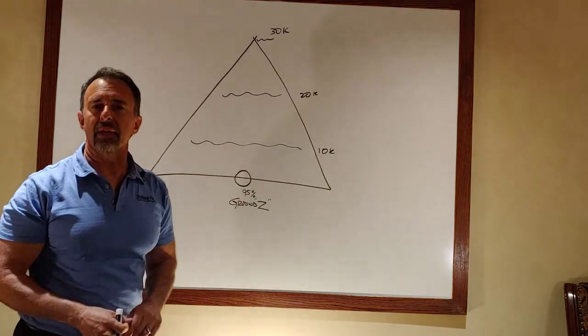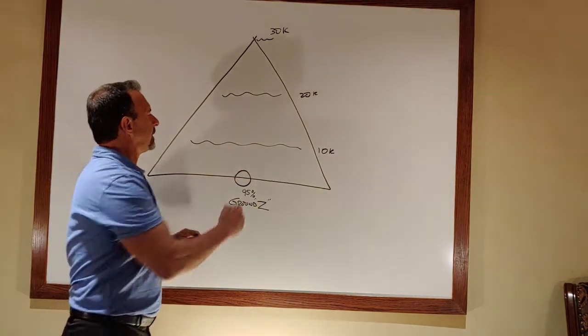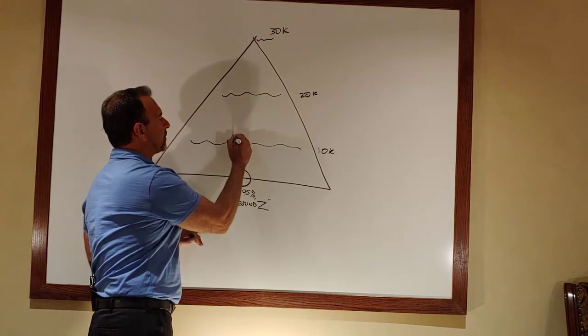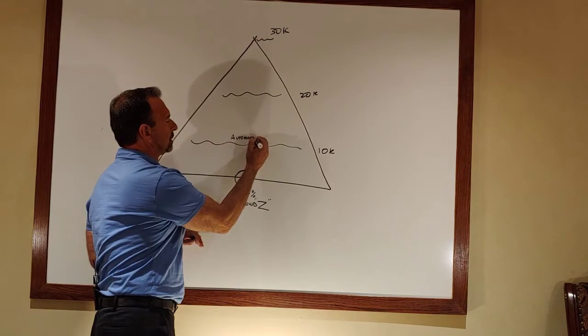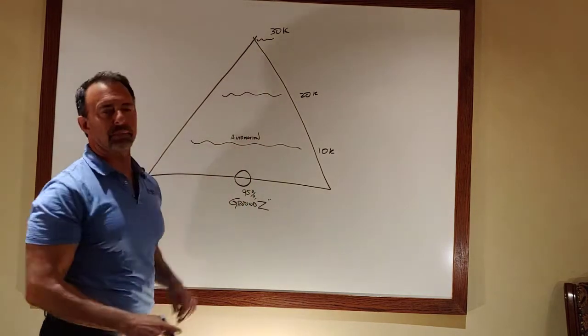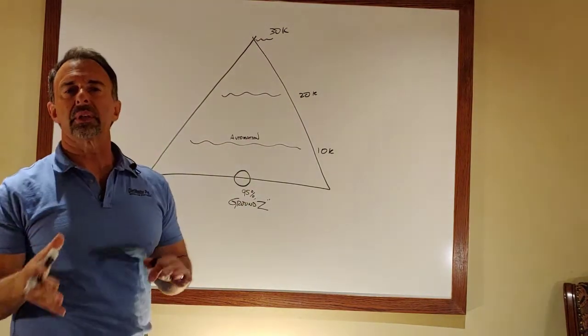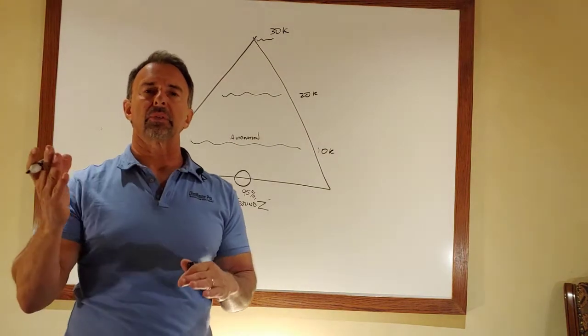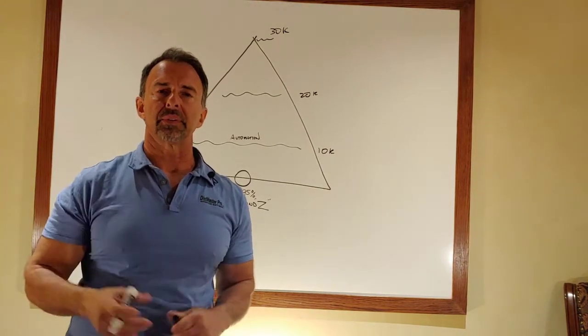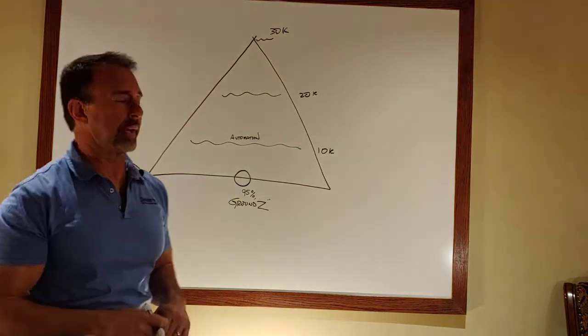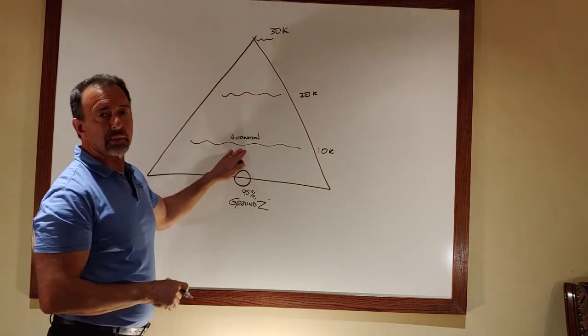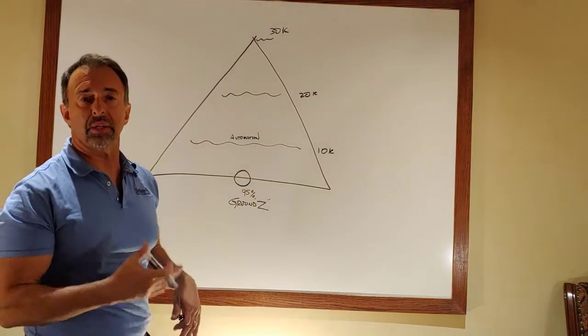What happens at the 10K level? You add additional staff and you add what's called automation. Automation could be technology, things that allow you to process customers, process transactions much faster. That's what it's all about. It's speed, organization, managing your business.